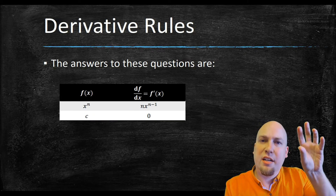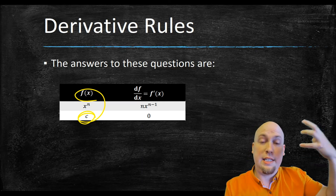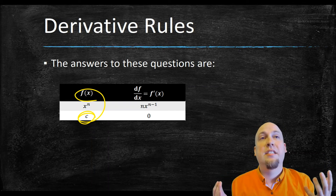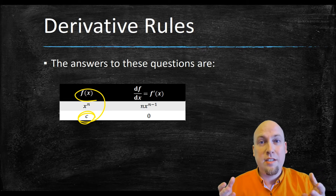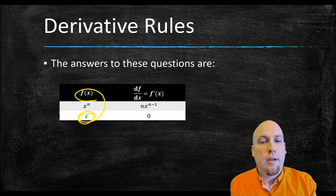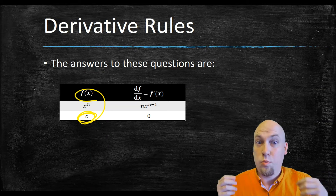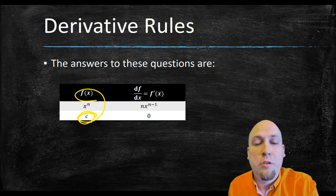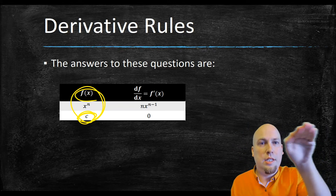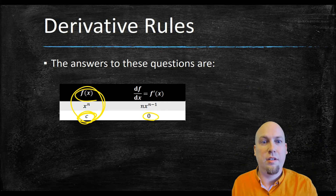What if your function is a constant — f of x just equals c for all x? The derivative is zero. That makes intuitive sense: a derivative is a rate of change, describing how quickly a function is changing. A constant function doesn't change, so its rate of change is zero. Another way to think about it: the graph of f of x equals c is just a horizontal line, and the slope of a horizontal line is zero — and the slope of the graph is the derivative.